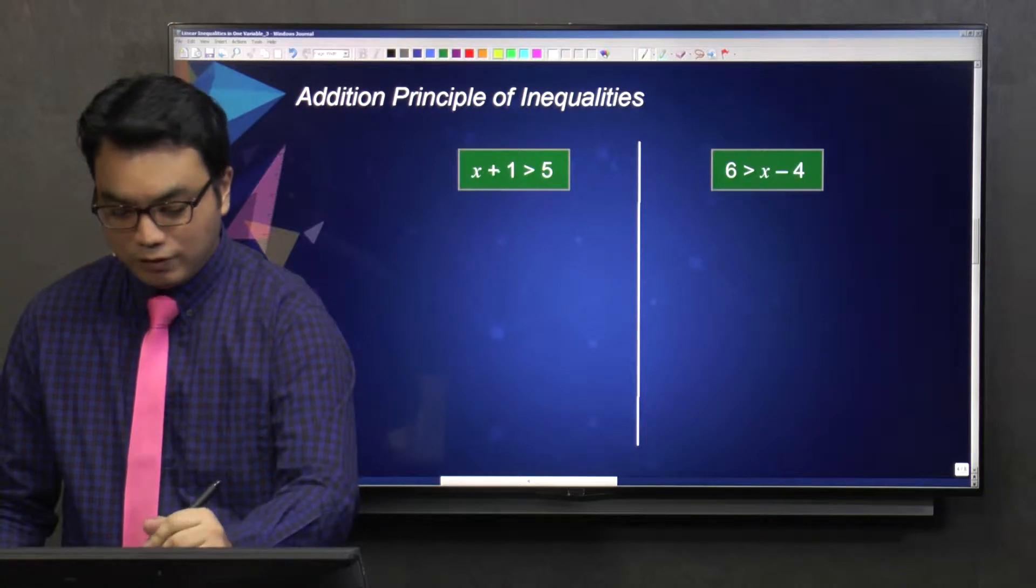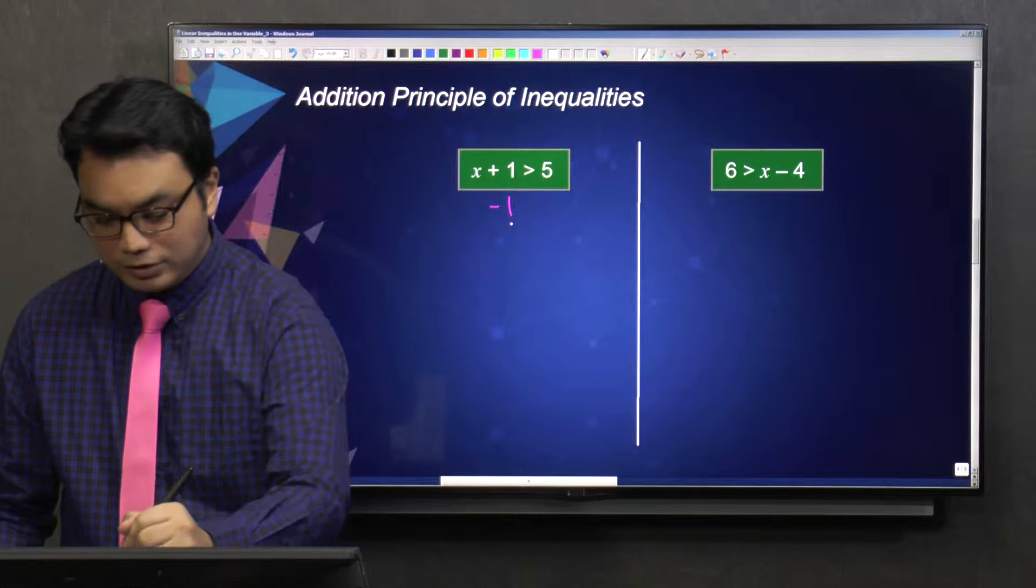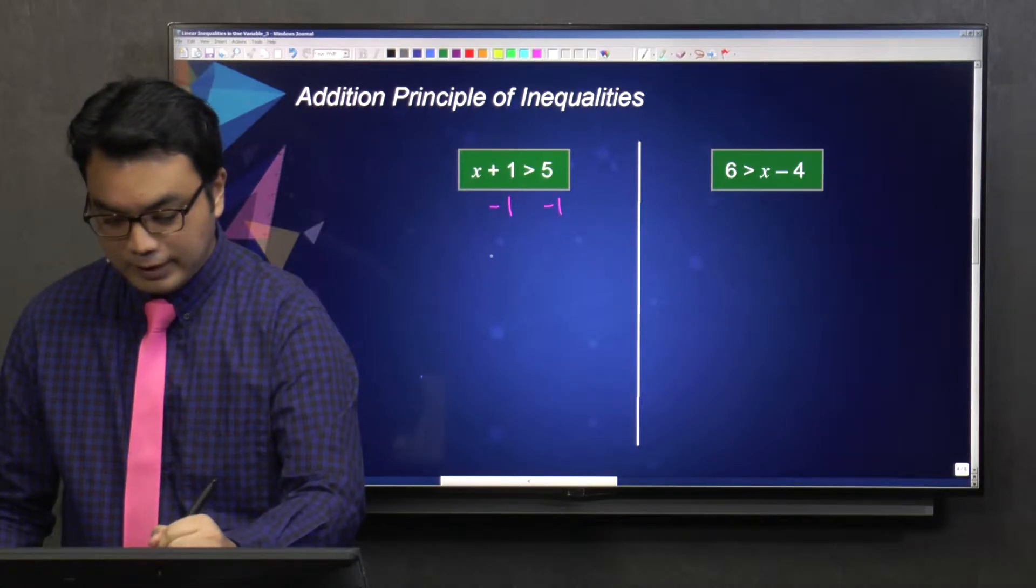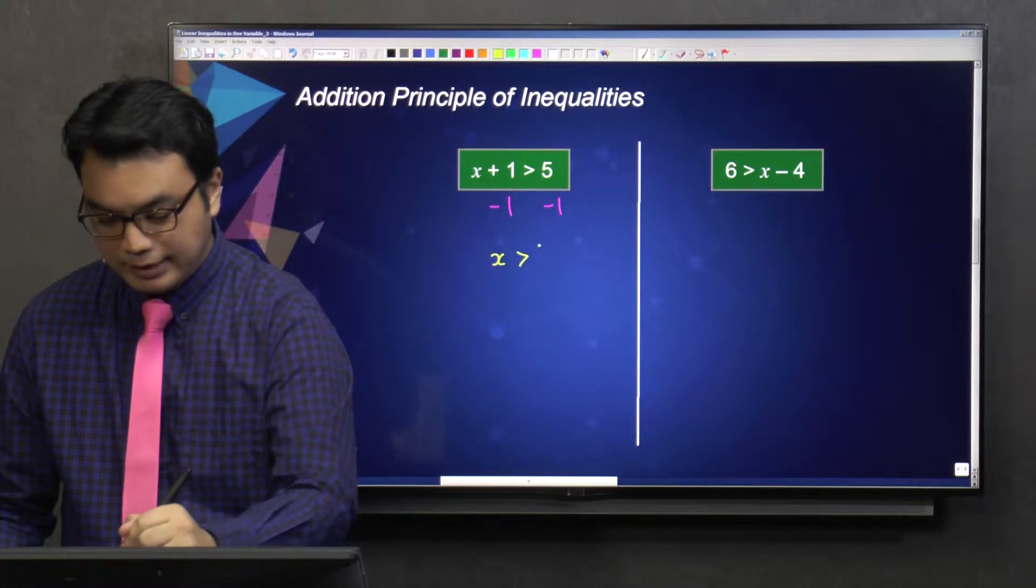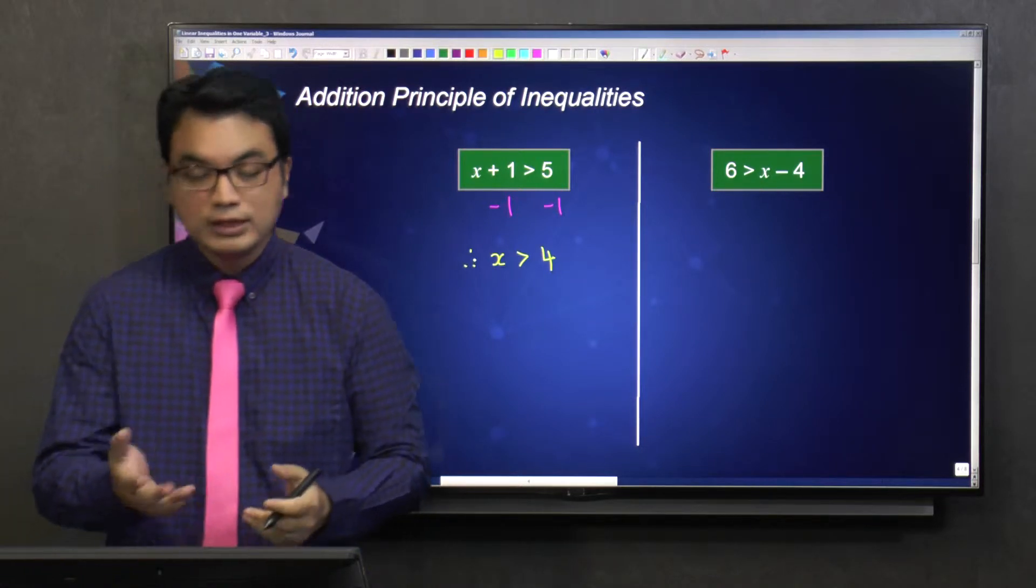Alright, so over here let's subtract 1. On the right hand side also subtract 1. So we'll have x greater than 5 minus 1 is 4. And this is the solution to the inequality.